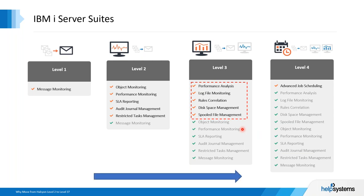Today we're talking about Level 3 and what's in it for me. Halcyon has quite a number of products, and several years ago we split them into suites for simplicity. Level one is the baby suite; most people start at the entry level, Level 2. The products we're covering today are the ones that differentiate Level 2 from Level 3. We'll spend time in each of these five areas. Level 4 is everything in Level 3 plus the scheduler.